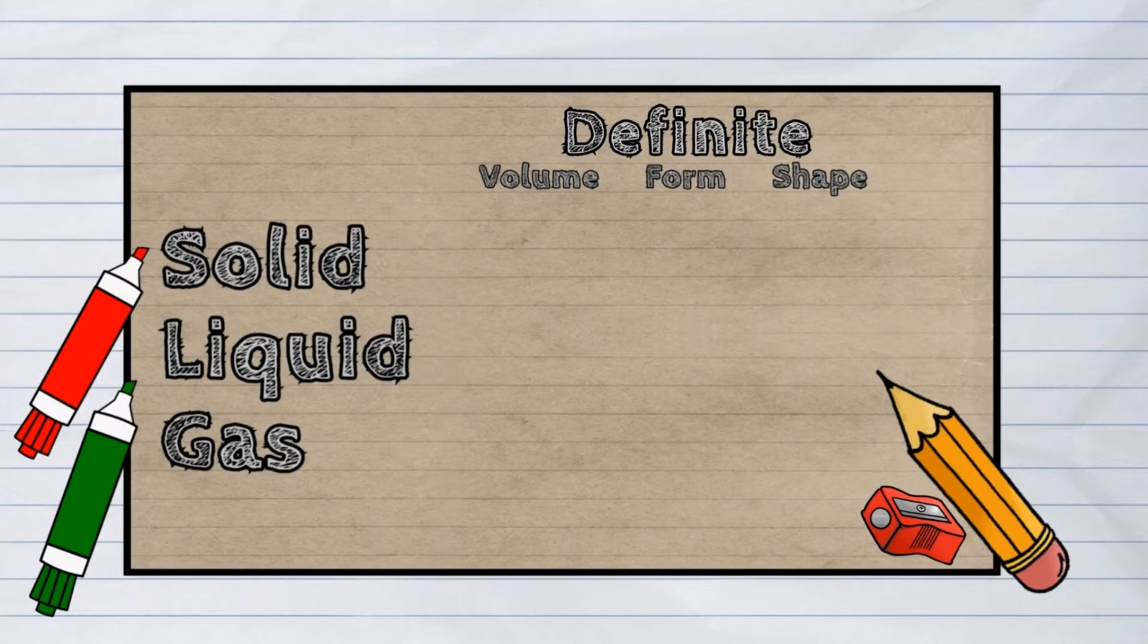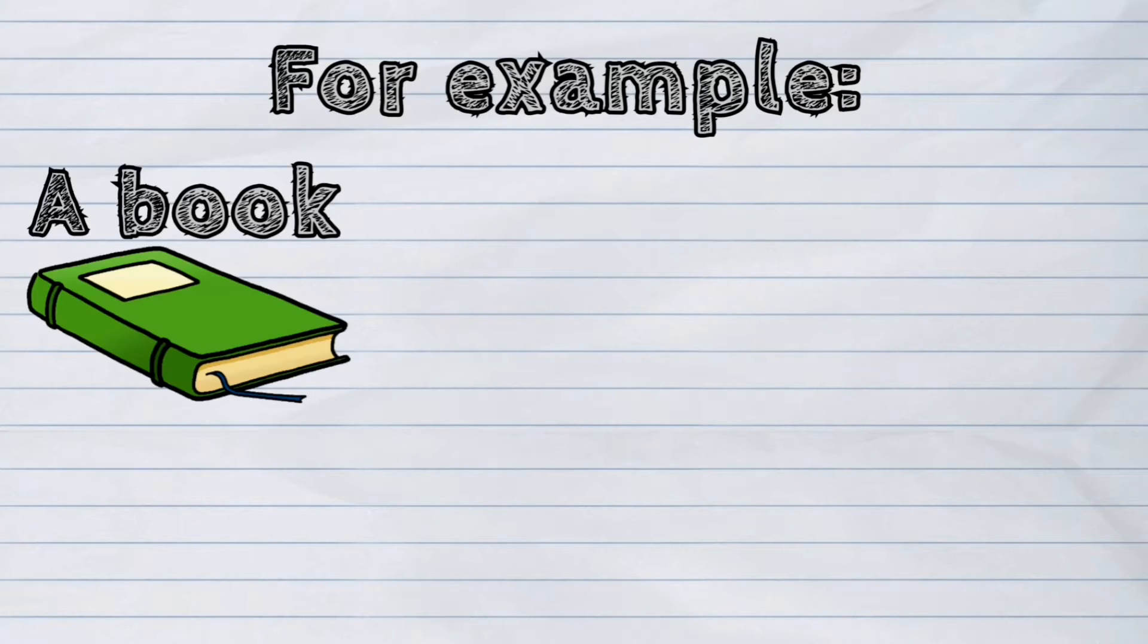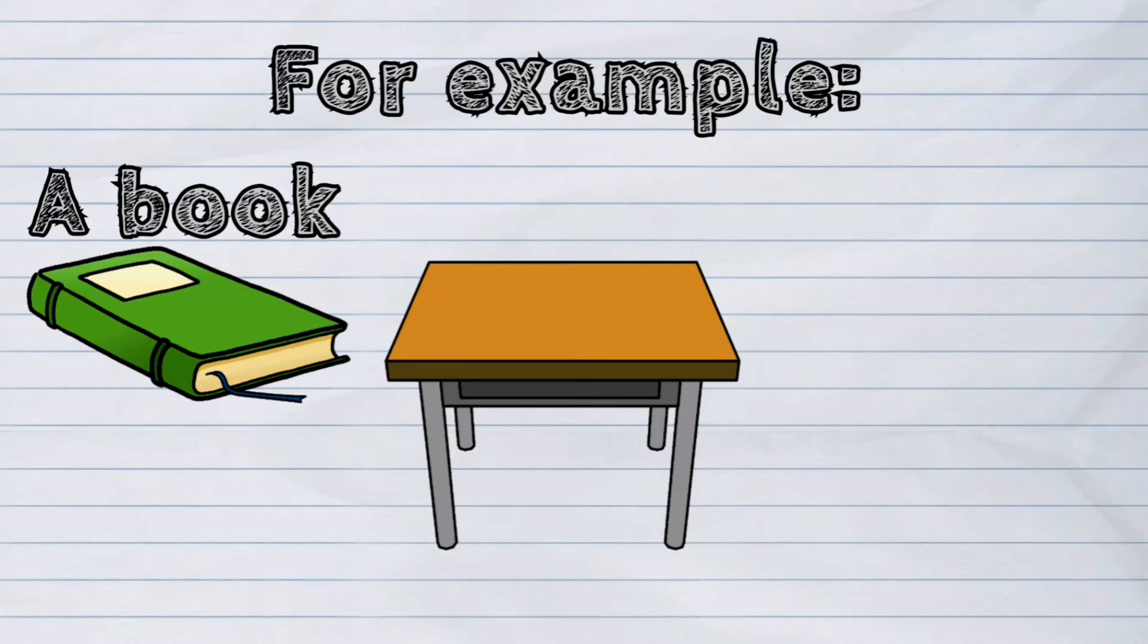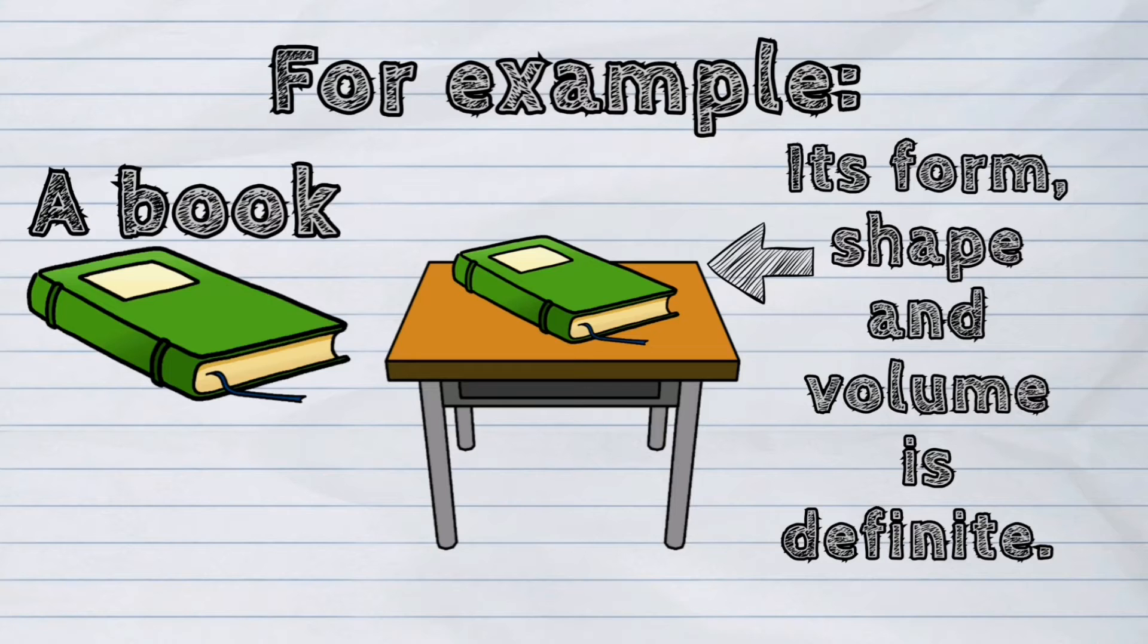A solid has a definite form, definite volume, and definite shape. For example, a book. When we place it on top of a table, we will notice that its form, shape, and volume is definite.